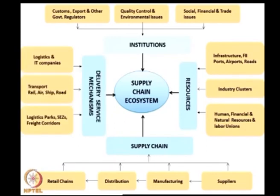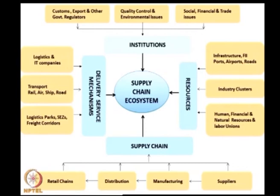Finally, delivery infrastructure: the logistics and IT companies needed — 1PLs, 2PLs, 3PLs, and 4PLs — and transportation available by rail, air, ship, and road. Also logistics parks, special economic zones, freight corridors, and so on. This diagram gives you a cosmic view of not only your supply chain but all the extraneous factors from governments, resources, and delivery — all the factors that affect your supply chain.